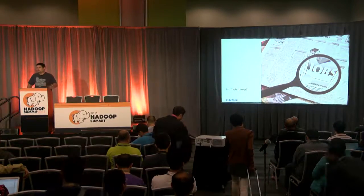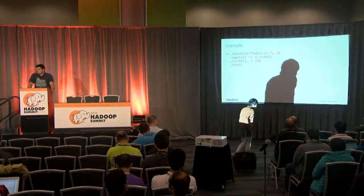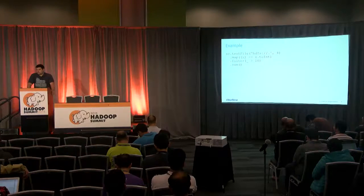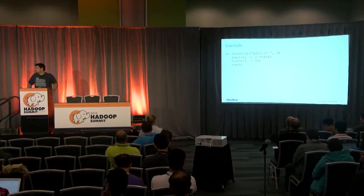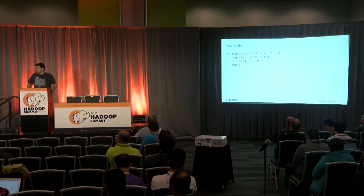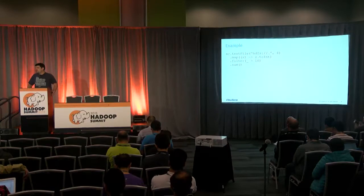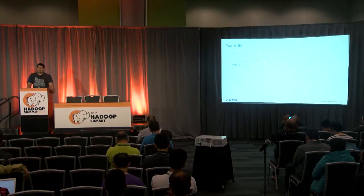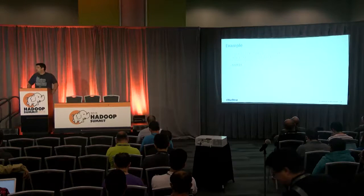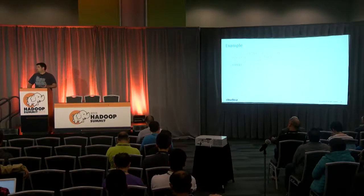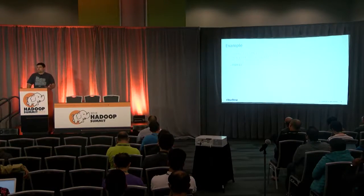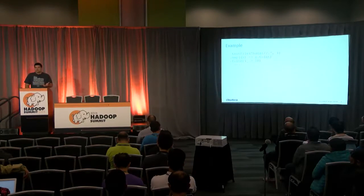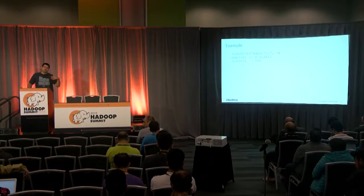The error says the job failed because the stage failed, and task one of stage zero failed four times. So what is a job in Spark? To understand that, we start with a simple example. SC is a spark context — it reads a text file from HDFS, does a cast from string to integer, filters everything bigger than 10, and then gives a sum. The action that actually generates a job is the sum, the last statement.